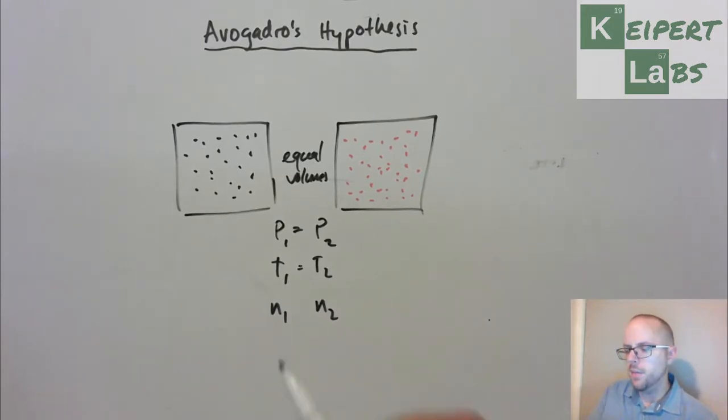Then what we can do is we can actually draw some conclusions about what are the number of particles in each box. If we can say, if the pressures are equal, the temperatures are equal, the volumes are equal, then even though we have gases with different particles, the black ones over here and the red ones over here, we can actually make the next logical step and say, well, everything else is kept the same, that it's then reasonable for us to say that they have the same number of particles in each box.